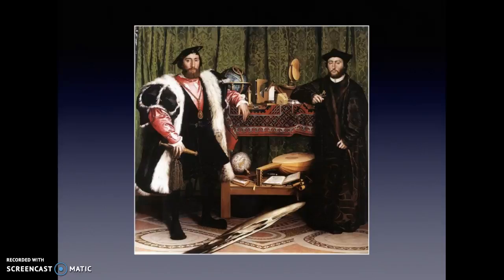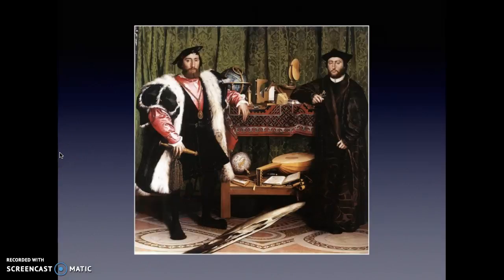The upper shelf of the object in the painting is concerned with the heavens — this is where the celestial globe, the portable sundial, and various instruments used for understanding the heavens are kept, along with instruments for measuring time. The lower shelf reflects the affairs of the world, holding musical instruments, a hymn book, a book of arithmetic, and a terrestrial globe.